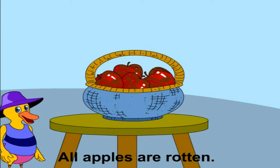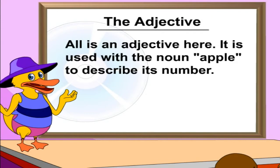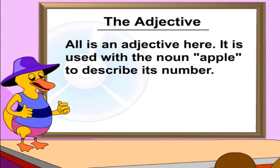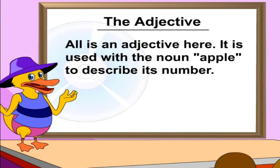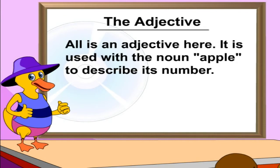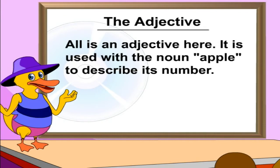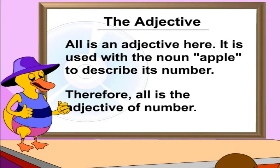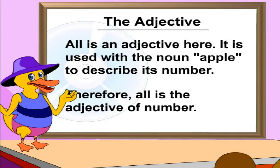All apples are rotten. All is an adjective here. It is used with the noun, apple, to describe its number. Therefore, all is the adjective of number.